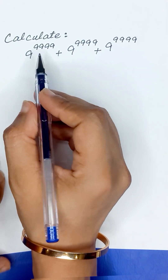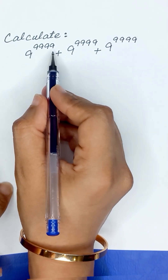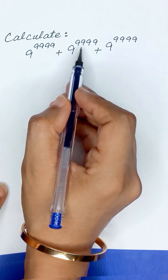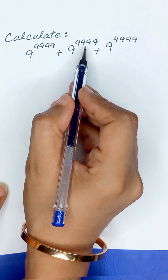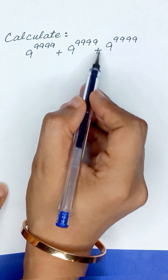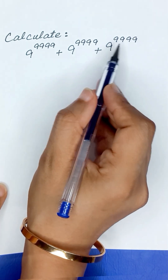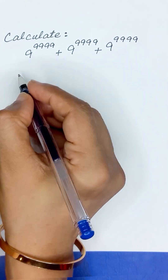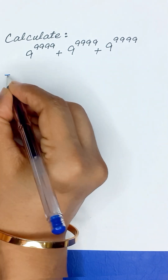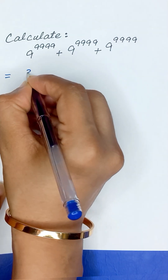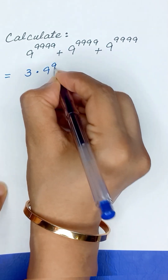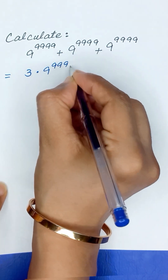Calculate 9 to the power 9999 plus 9 to the power 9999 plus 9 to the power 9999. It can be written as 3 times 9 to the power 9999.